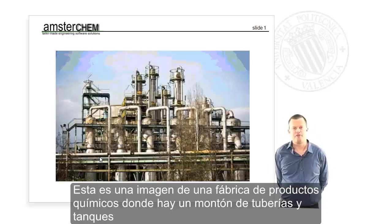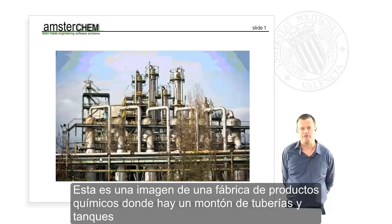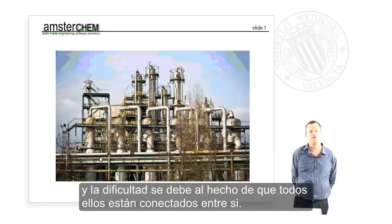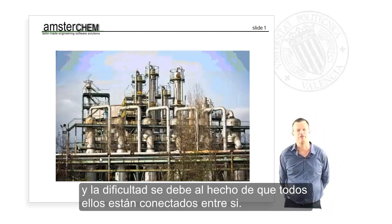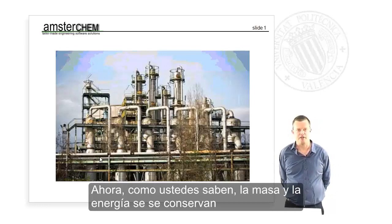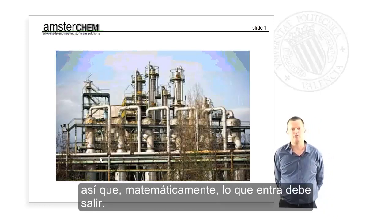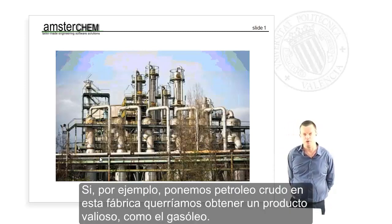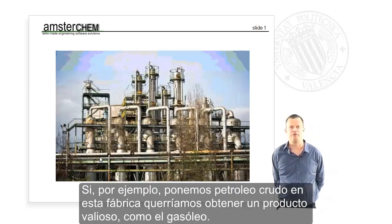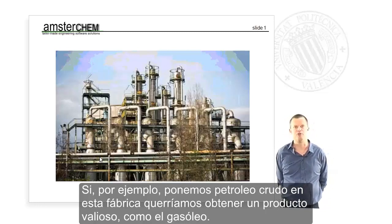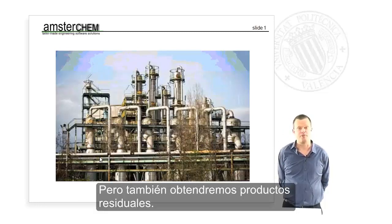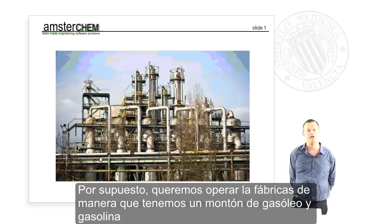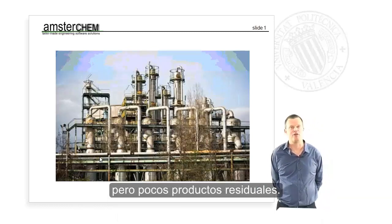This is a picture of a chemical factory. There are a lot of pipes and vessels, and the complexity arises from the fact that all these pipes and vessels are interconnected. As you may know, mass and energy are conserved, so what goes into this factory must come out. If we put crude oil in, we want the valuable diesel and gasoline to come out, but we also get waste products. We want to operate the factory to maximize diesel and gasoline output and minimize waste.